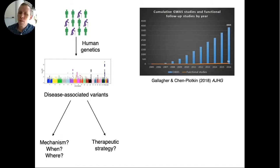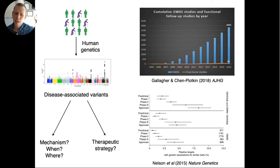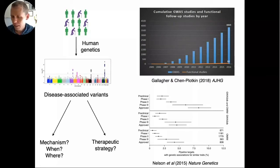This is a big problem. This graph shows in the blue bars how the number of genetic variants identified in GWAS studies has steadily increased over the last ten or so years. The orange line here is not actually the x-axis of the graph — it's the number of functional studies that has been done on these genetic variants. So there is a huge need to bridge this gap to go from genetics to function, mechanisms, and therapeutic strategies. A study from 2015 found that pipeline targets backed up by human genetics had a much higher rate of making it to later stages of the pipeline and approval, so human genetics can be an important guide for drug discovery.